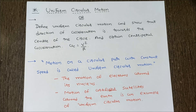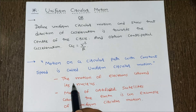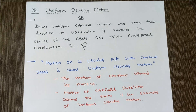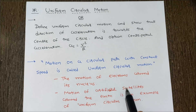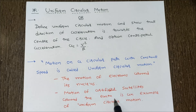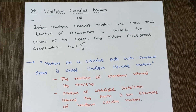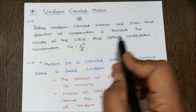For example, the motion of an electron around its nucleus is an example of uniform circular motion. Second, the motion of an artificial satellite around the earth is also an example of uniform circular motion.